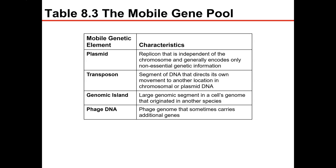Genomic islands are large genomic segments within a cell or genome that originated from another species. Phage DNA is DNA that comes from bacterial phages that carry specific genes that move into the cell.